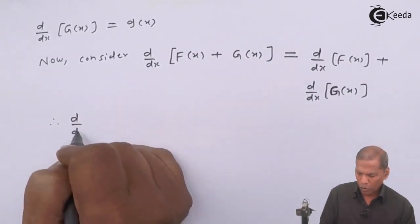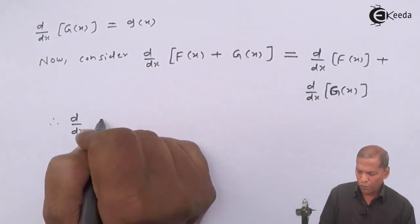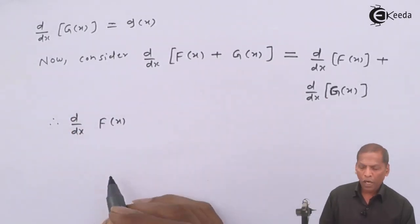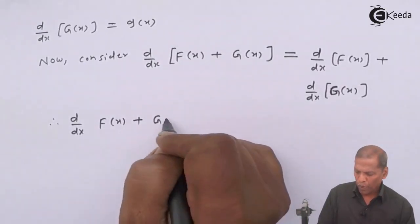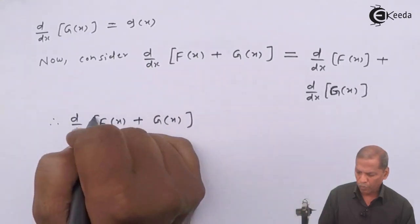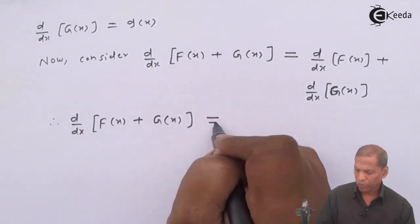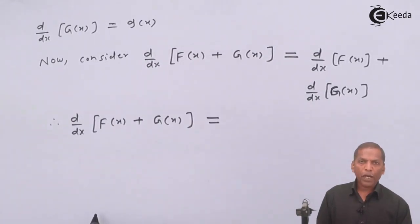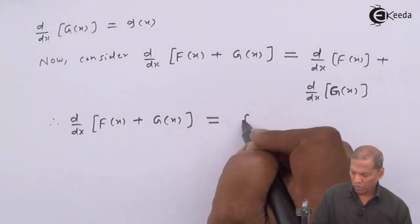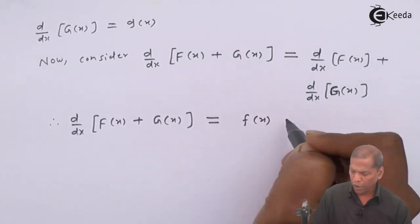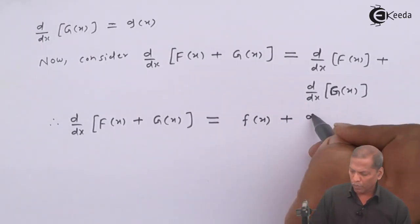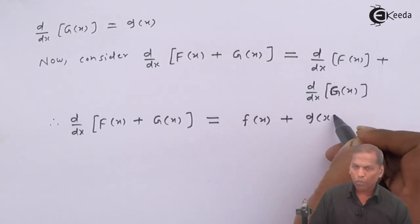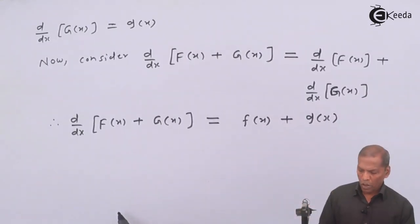Therefore, d/dx of [capital F(x) + G(x)] is equal to d/dx of capital F(x) plus d/dx of capital G(x), which is equal to small f(x) plus small g(x).